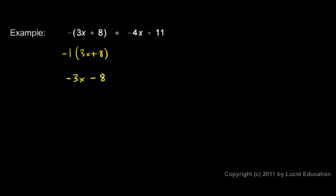So the effect of this negative sign outside this parentheses is to change the sign of each of these things. You can see this 3x became a negative 3x. And the 8 which was a positive 8 became a negative 8. So that negative sign got distributed and negated or changed the sign of each of the things inside.